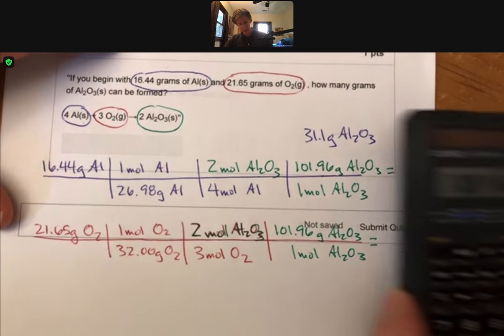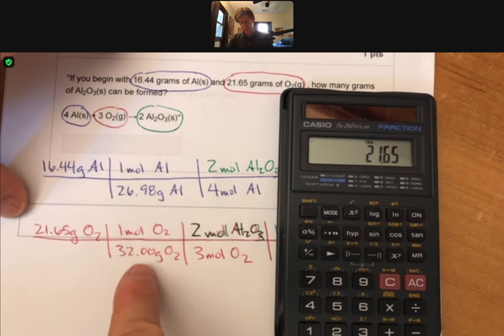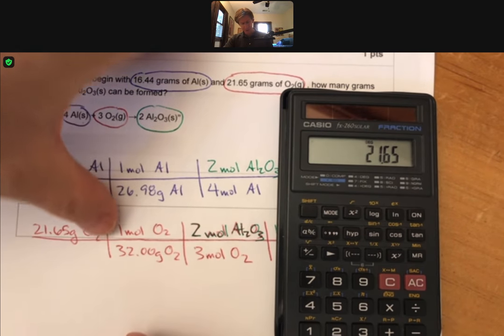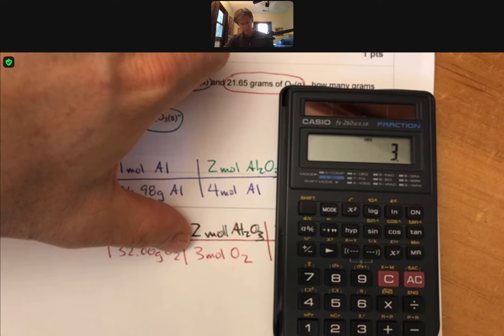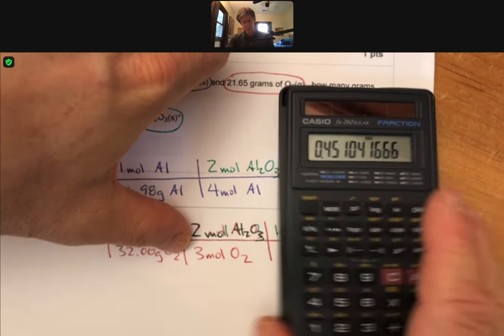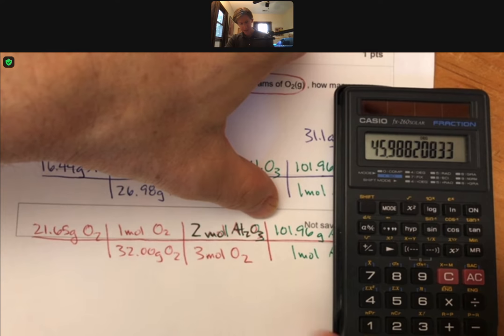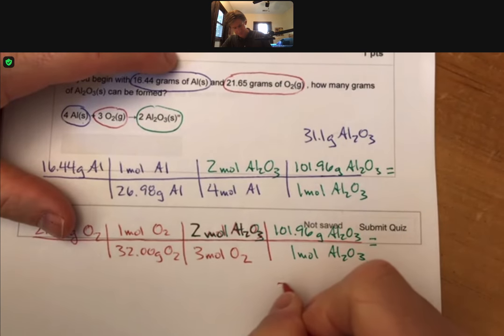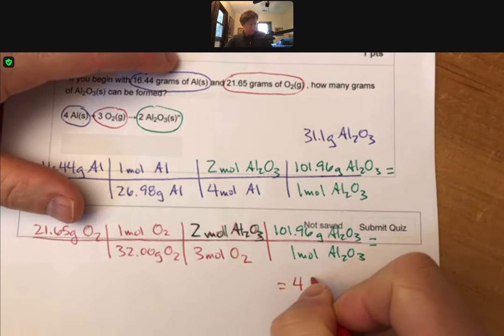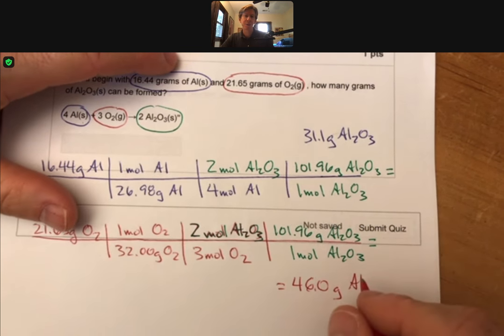Now let's do the oxygen. We've got 21.65. We have a larger amount of it, but the molar mass is bigger. I don't know. So sometimes I never know how these are going to end up. But divide it by 32, times it by 2, divide it by 3, and then times it by 101.96. And this time we get 45.99 or 46.0 rounded to 3 sig figs.